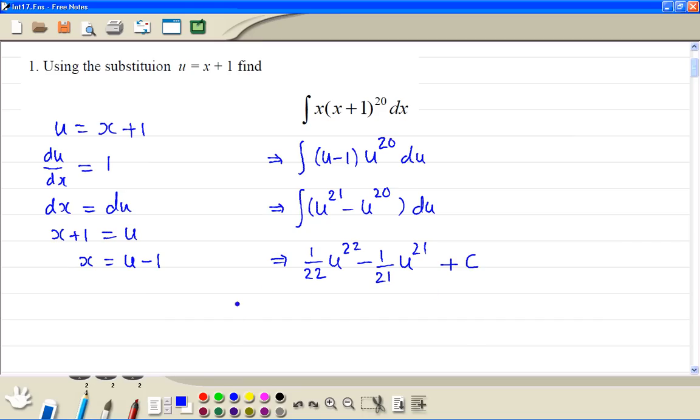Then we substitute back x. So therefore the integral of x times x plus 1 to the power 20 dx is equal to 1 over 22 times x plus 1 to the power 22 minus 1 over 21 times x plus 1 to the power 21 plus c.